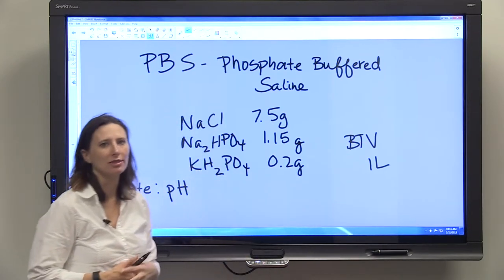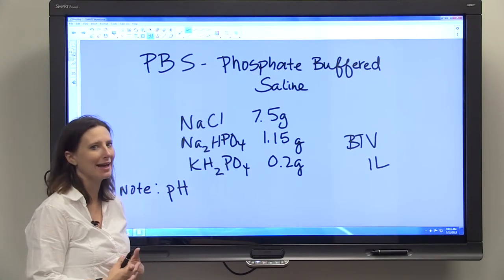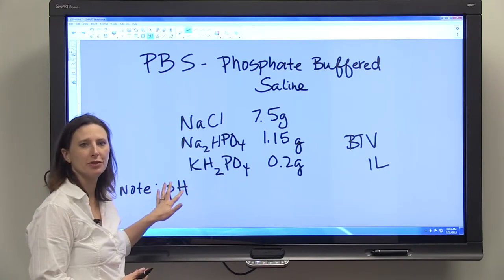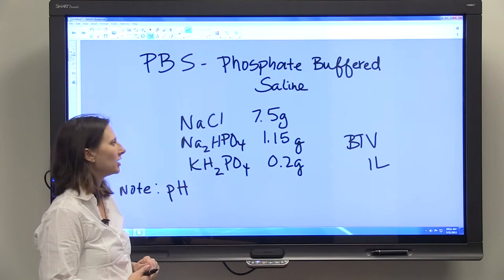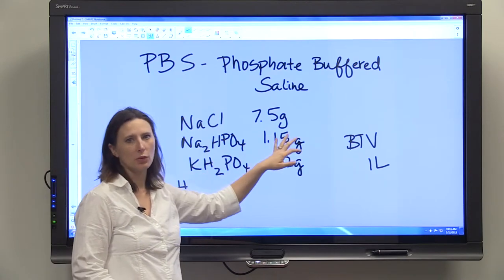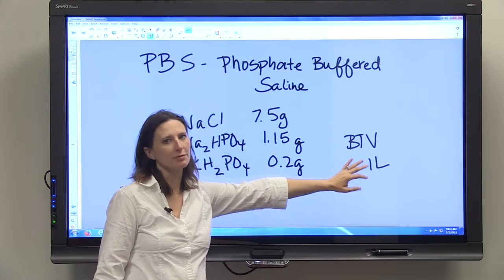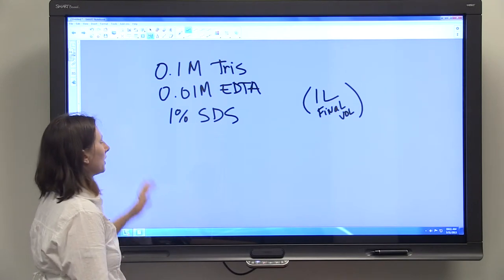You don't want to have the volume already at one liter when you do that because you're going to have to add volume by adding acid or base. So it's important if you're going to have to bring a solution to a particular pH that you dissolve the weights you've been asked to dissolve in a partial volume, not in the final volume.